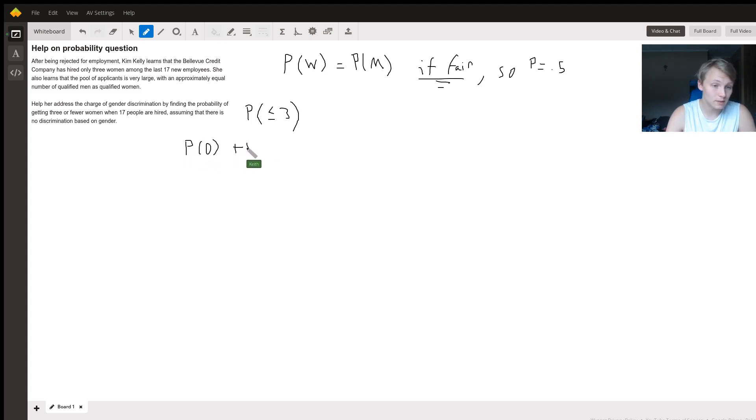So the probability of there being fewer than three women hired is the probability of zero women plus the probability of one plus the probability of two plus the probability of three. That makes sense, right? The probability of fewer than or equal to three being hired is the probability of three or two or one or zero. The probability of each of these follows that binomial distribution.